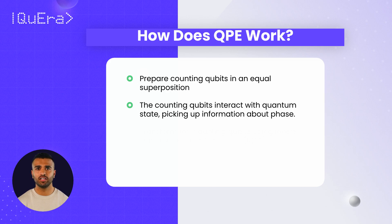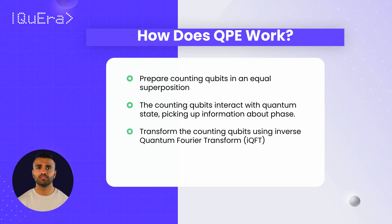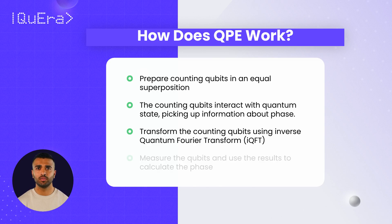Then, QPE transforms the counting qubits using a technique called the inverse quantum Fourier transform, or IQFT, which decodes their phase information. Last, QPE measures the qubits and uses the results to calculate the phase.